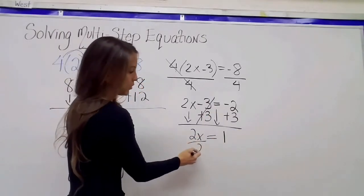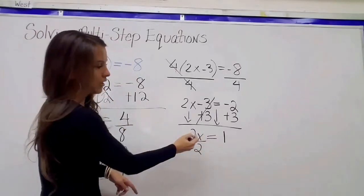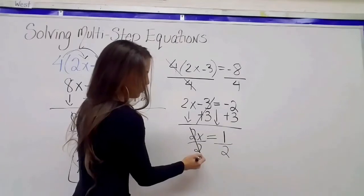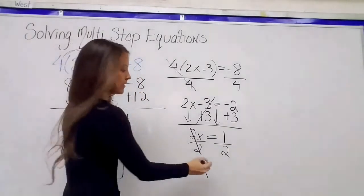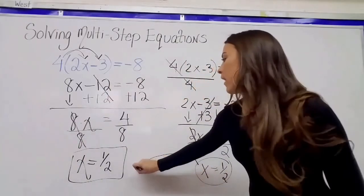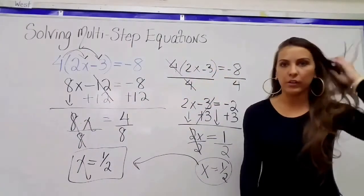Now I can divide by 2 on both sides, because that's multiplication. The inverse is division. Divide by 2 on the right. 2 divided by 2 is 1. 1 times x is just x. x equals 1 half, and I see that I got the same answer that I got earlier.